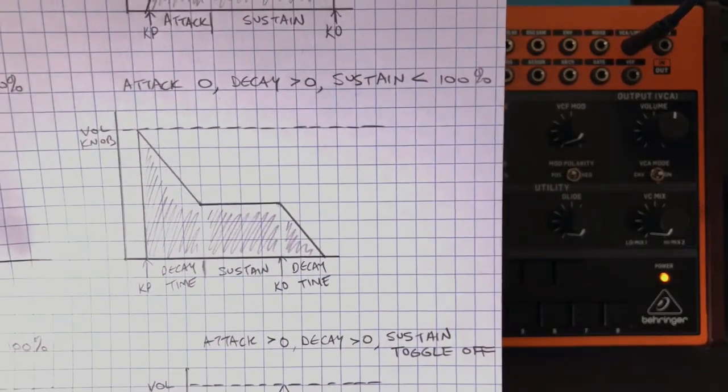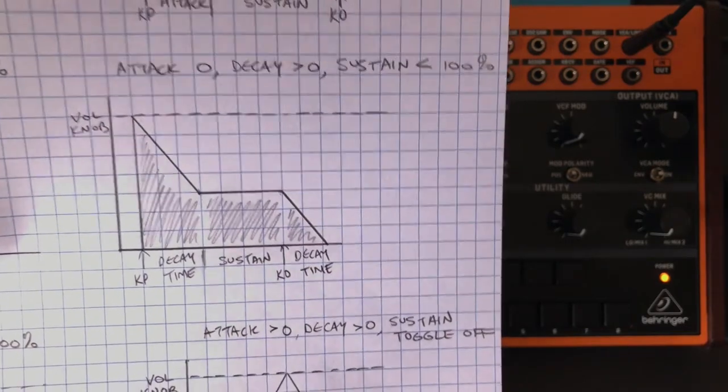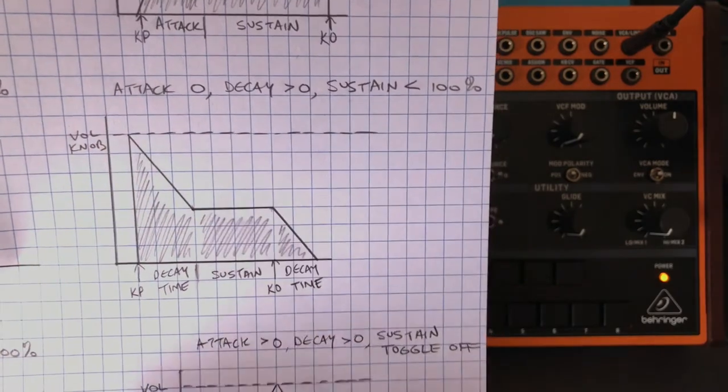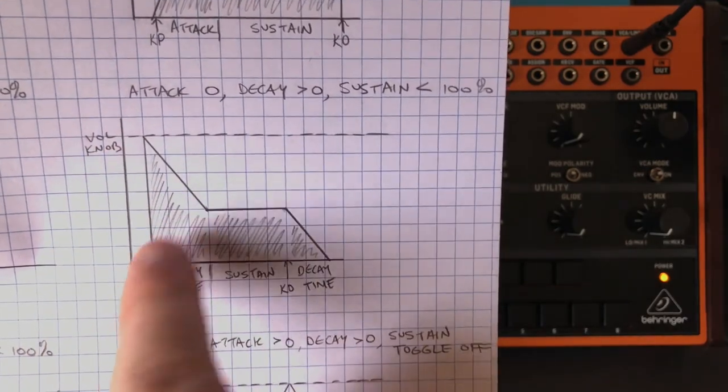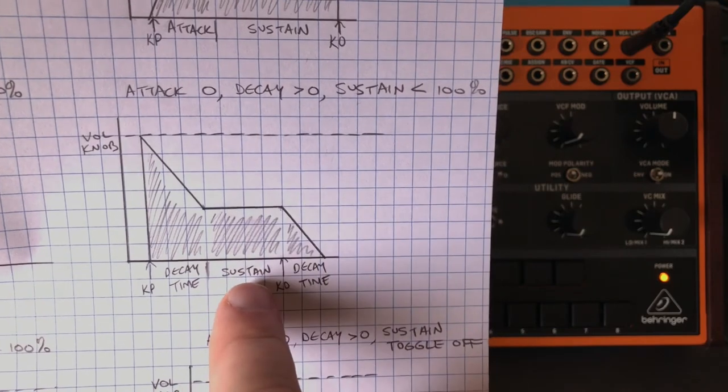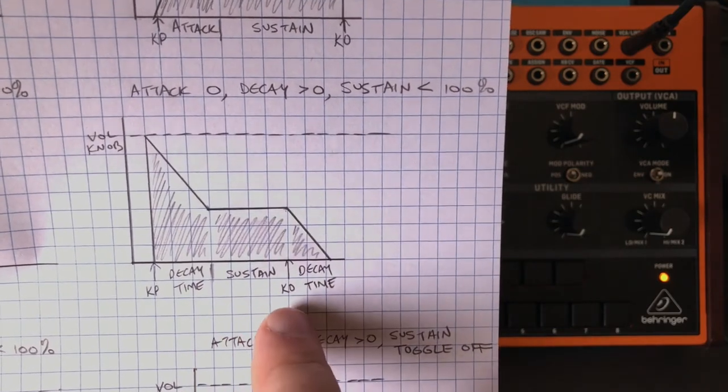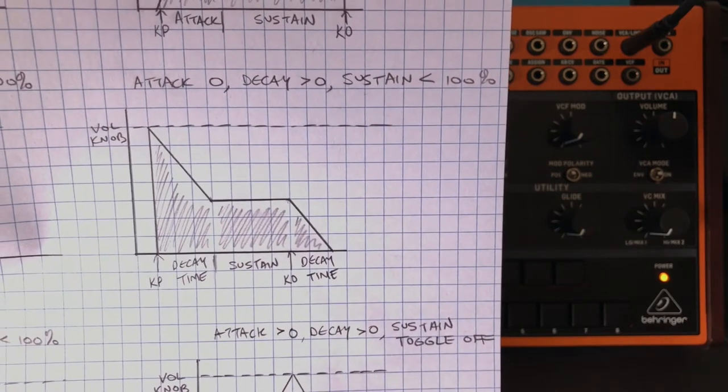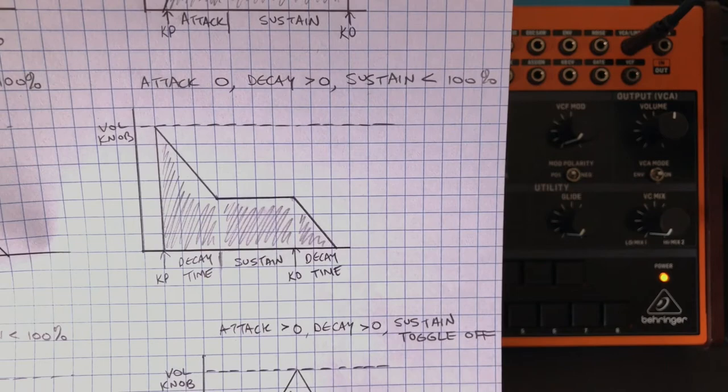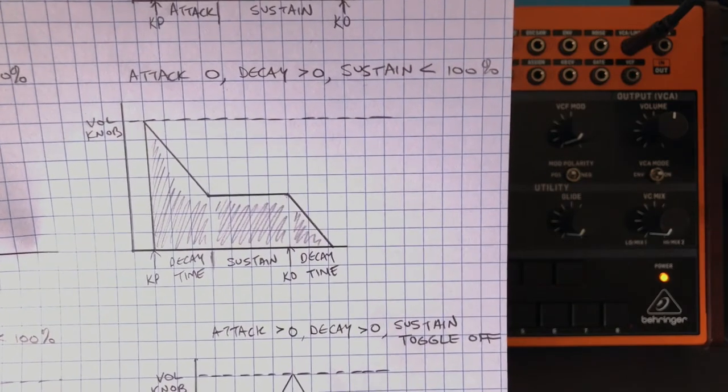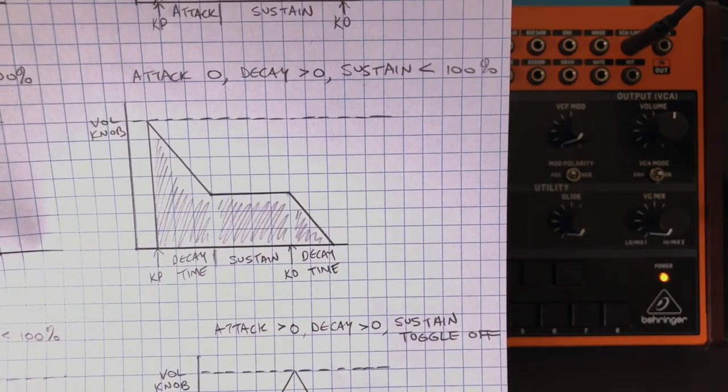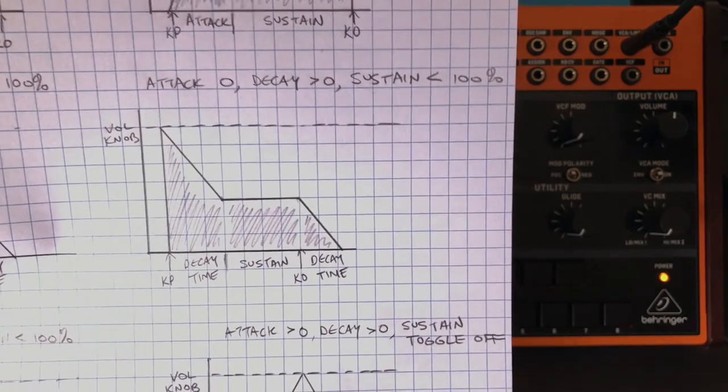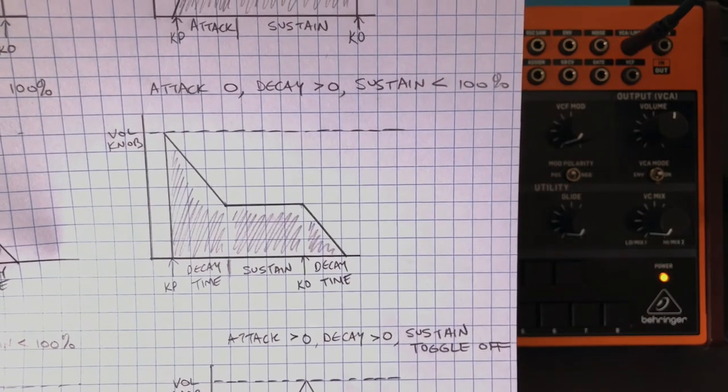Next, we're going to set our sustain level to something less than 100%. So at this point, we will still attack instantly to max volume. But then immediately, it will begin to decay. And then we'll hit the sustain level. And then I let go of the key, and it will decay again. So the decay comes after the attack, and comes after the sustain. If you're familiar with other synthesizers that may have an ADSR envelope, attack, decay, sustain, release, this synthesizer has attack, decay, sustain, decay.